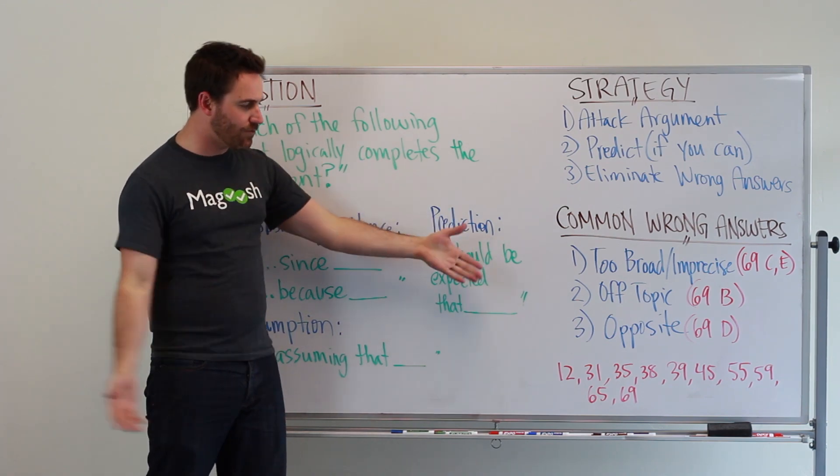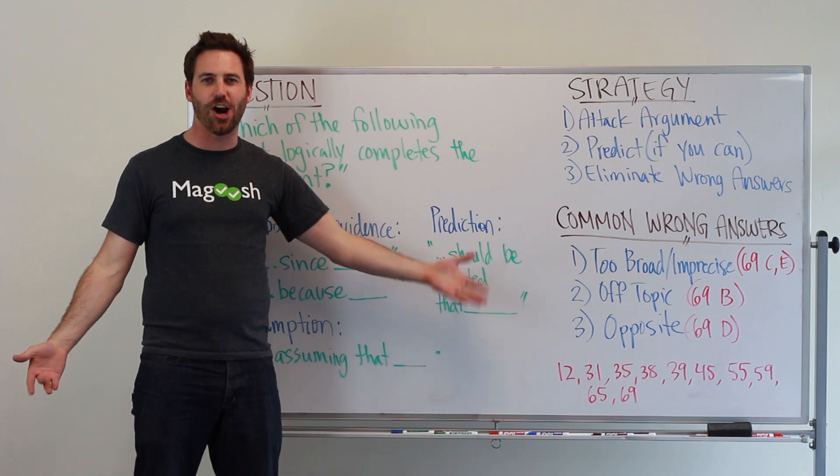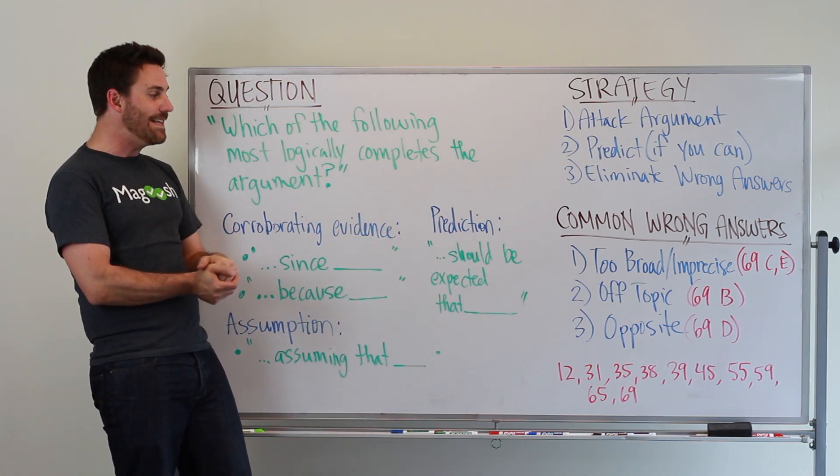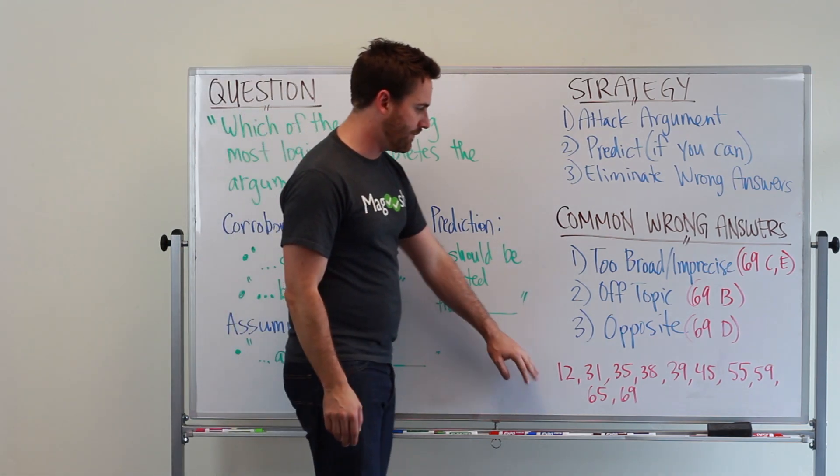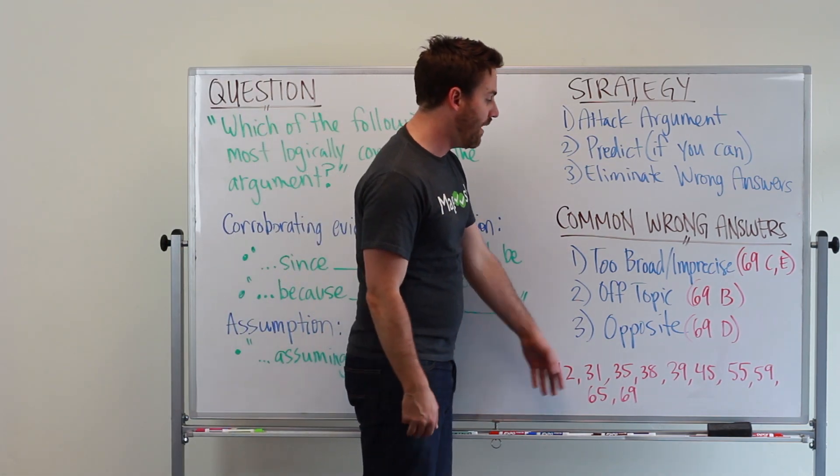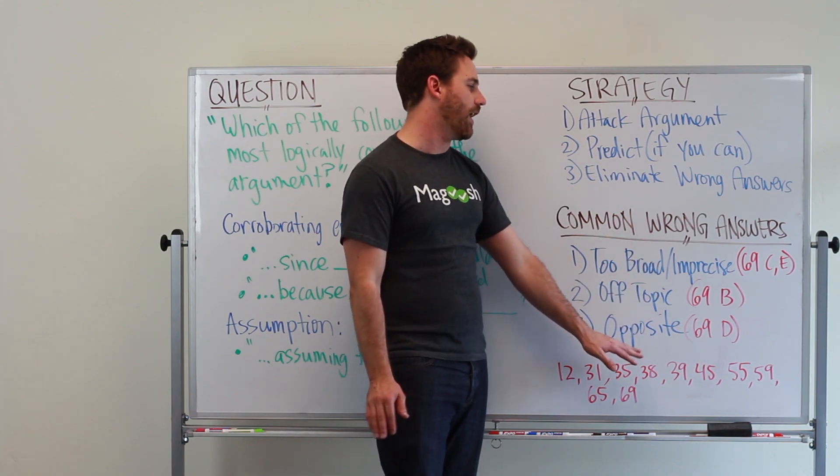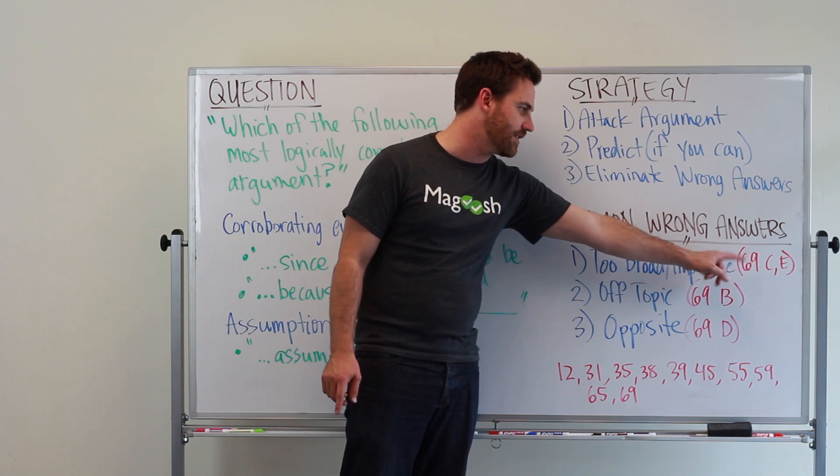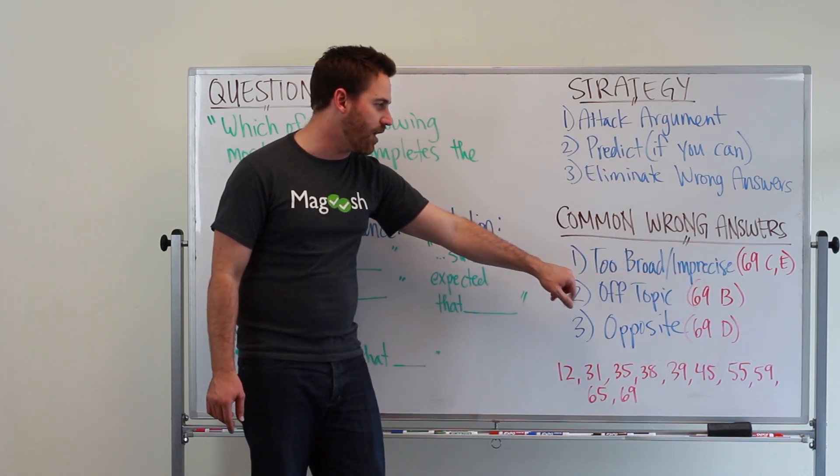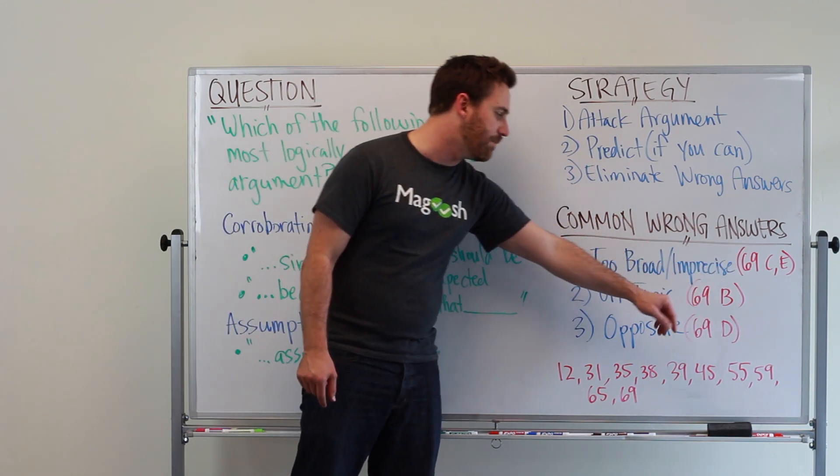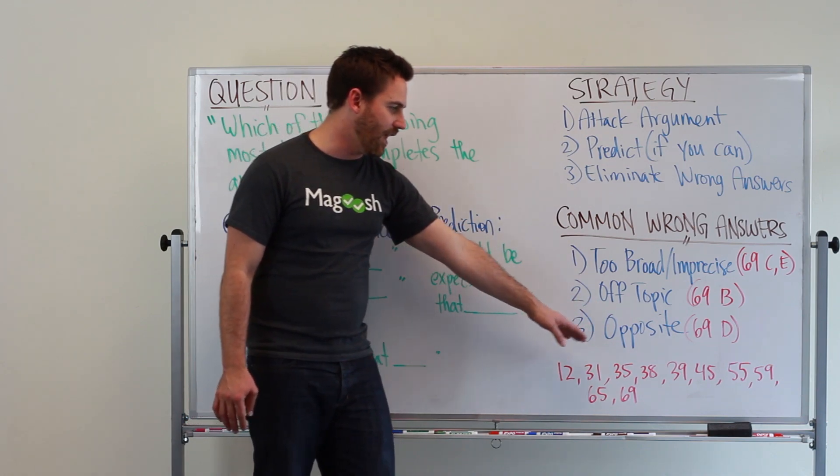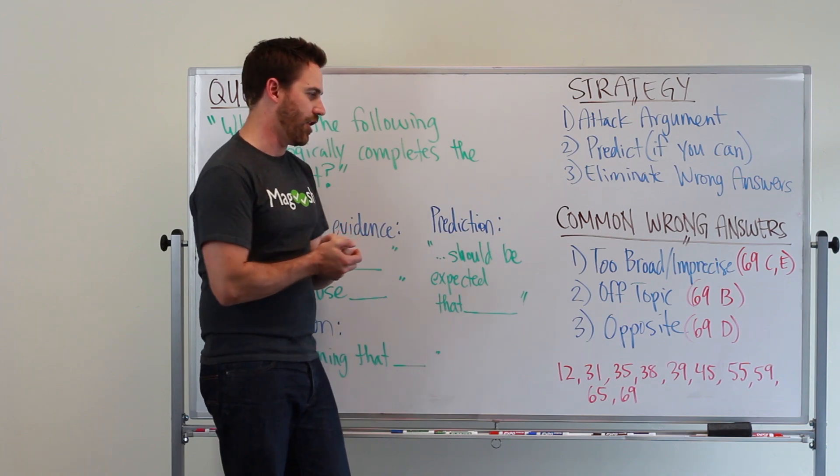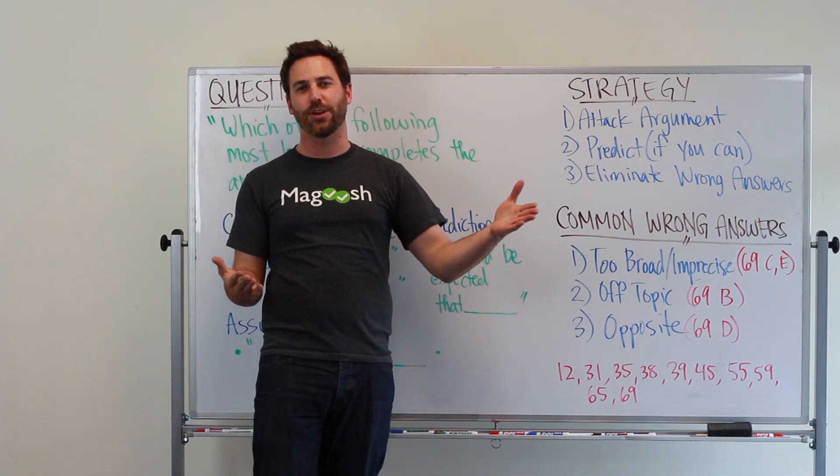You might be wondering what these red numbers are. These are example questions in the official guide to the GMAT, the 13th edition. If you want to get a sense of what these common wrong answers look like, I labeled question 69. Question 69C and E are too broad and imprecise. Question 69 answer choice B is off topic. And then answer choice D is opposite of what we're trying to achieve in the argument. So you can go and look at those to see some real world examples.